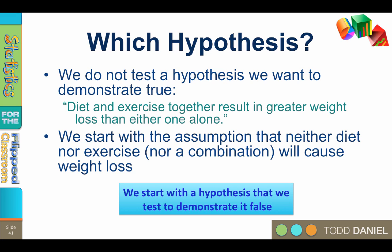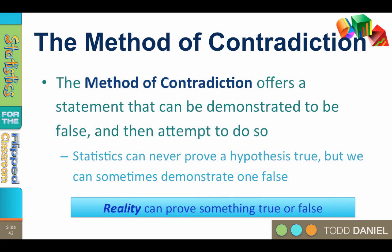We start with a hypothesis that we want to test to demonstrate that it's false. This is called the method of contradiction. The method of contradiction offers up a statement that can be demonstrated to be false, and then we use our statistical techniques to attempt to do so. The fact is that statistics can never prove a hypothesis is true, but we can sometimes demonstrate that one is likely to be false. And that is because we work within the realm of probability.